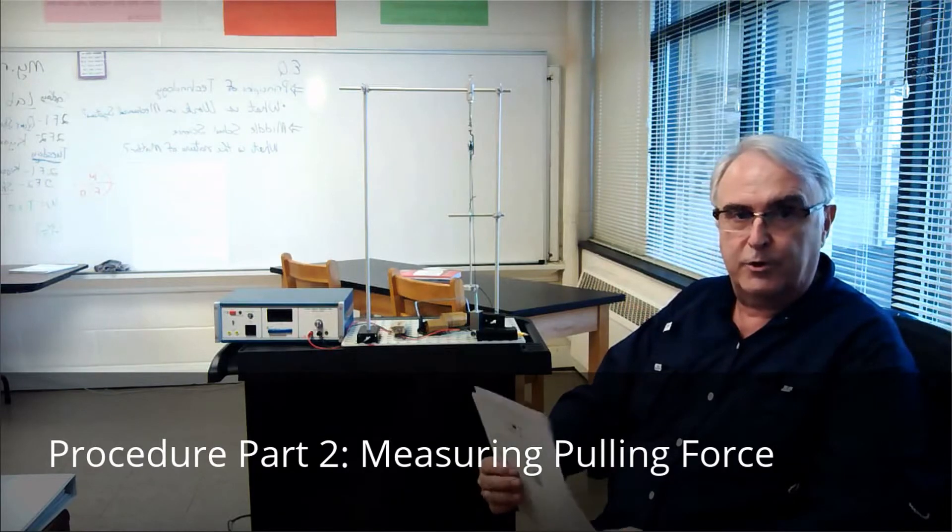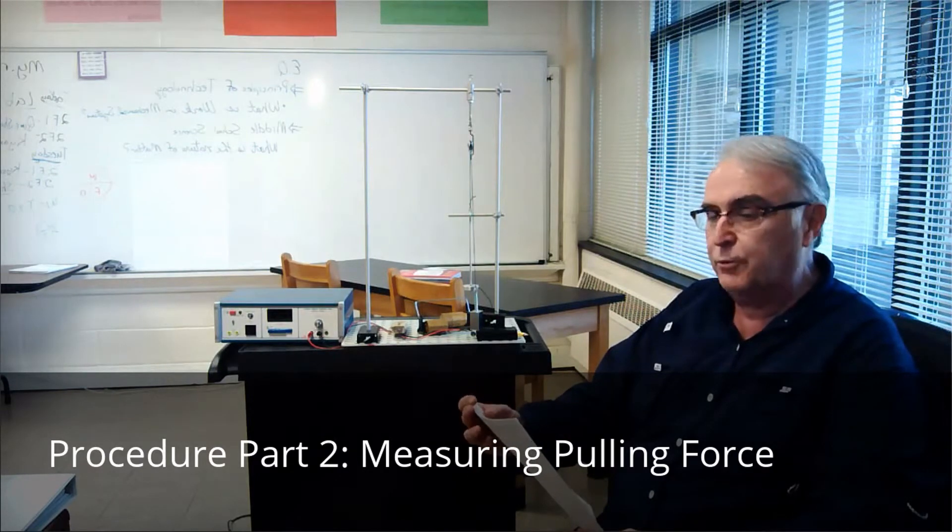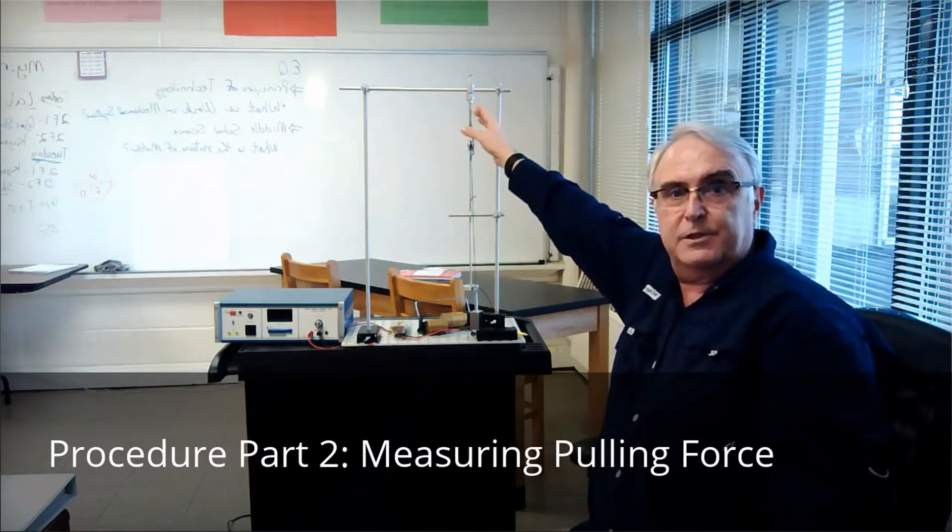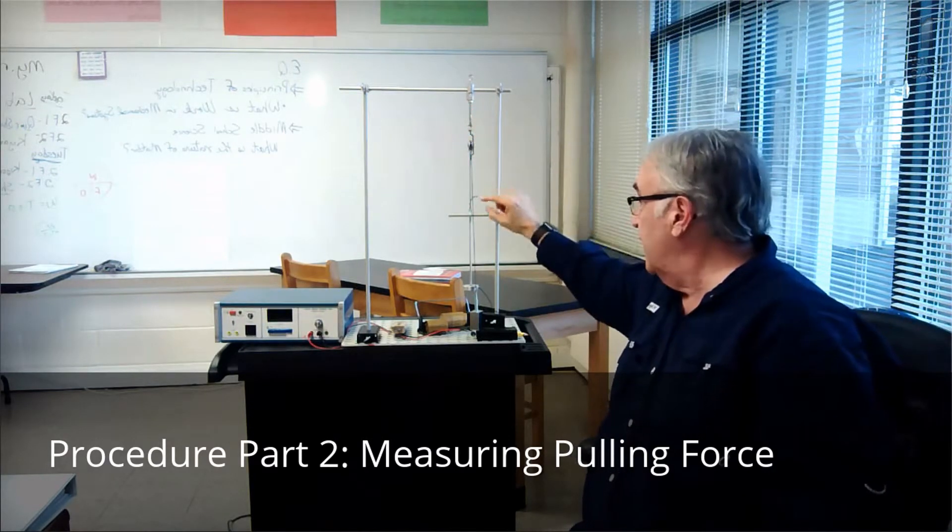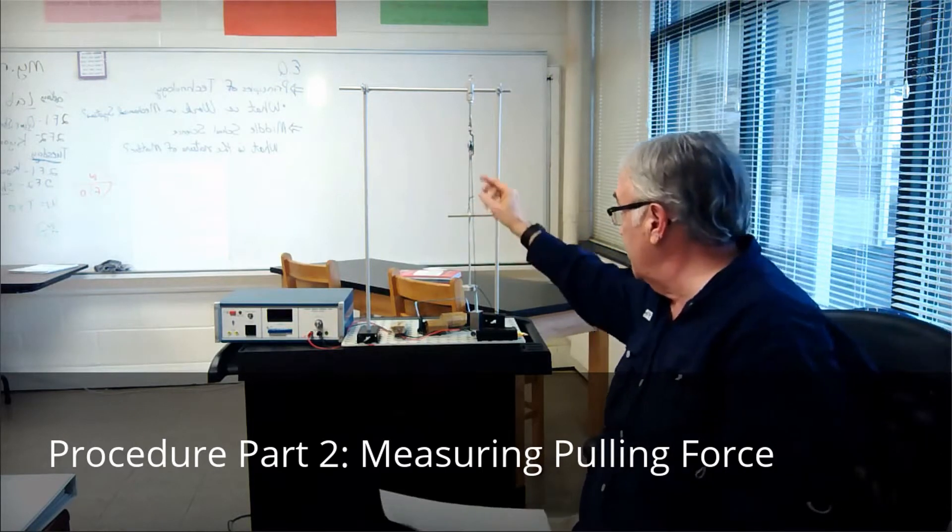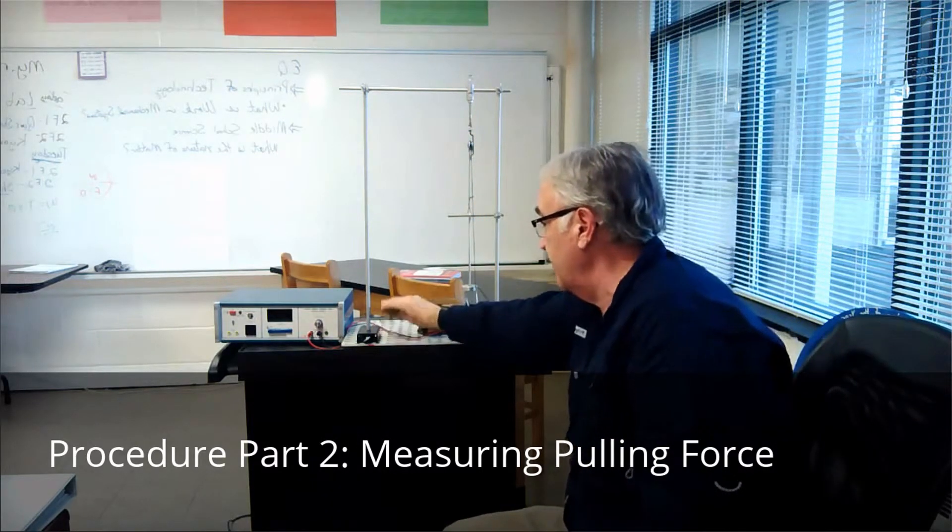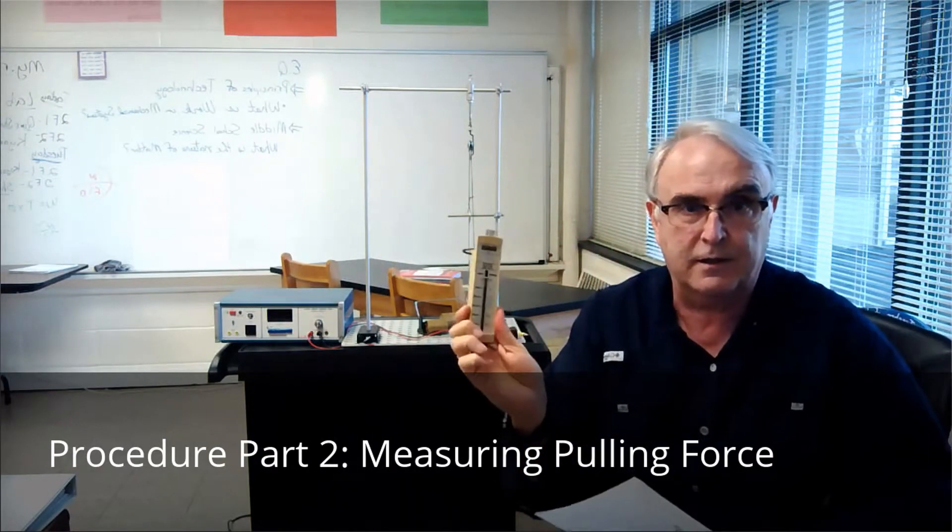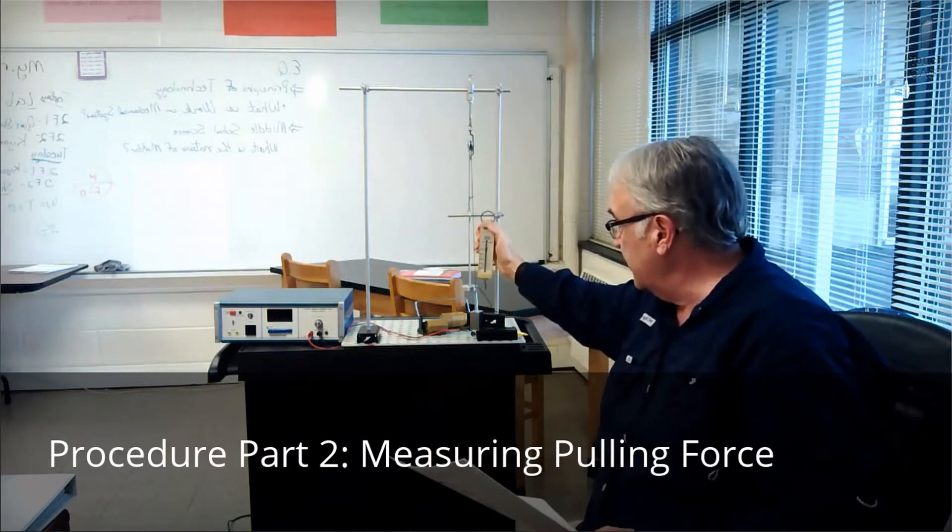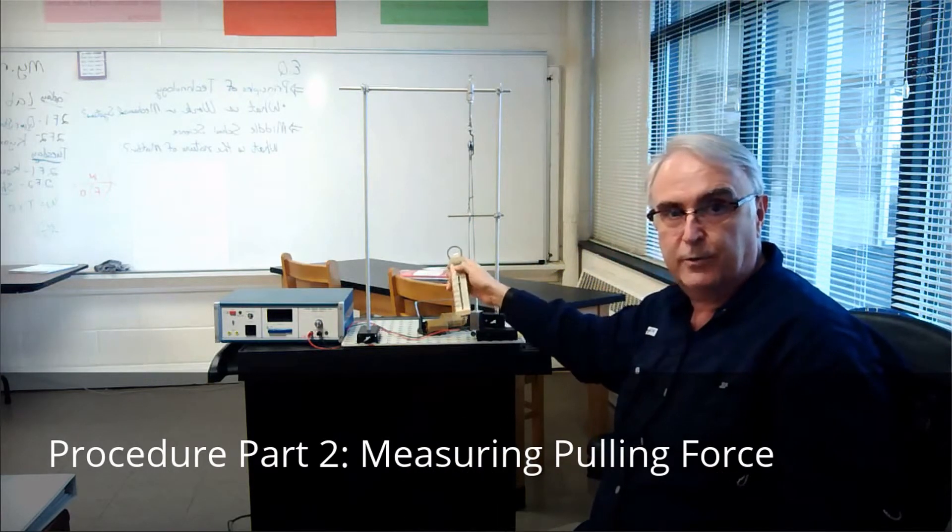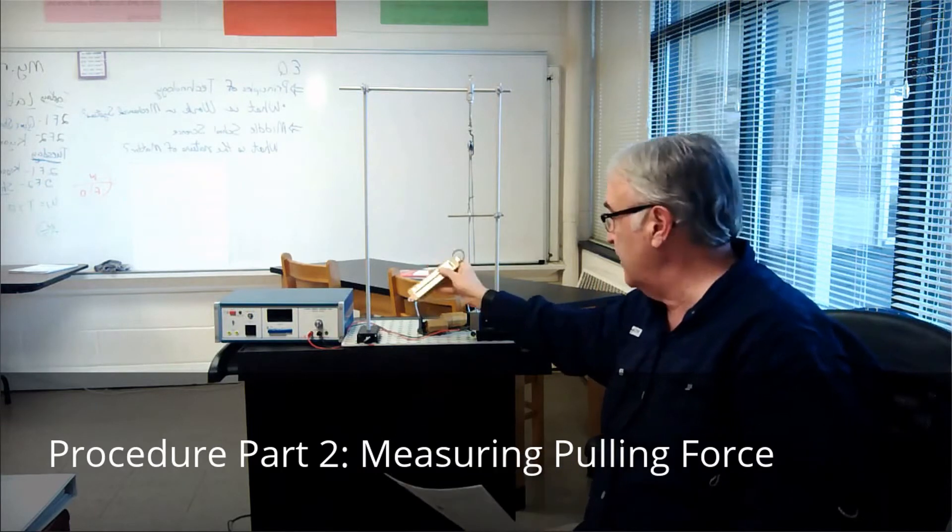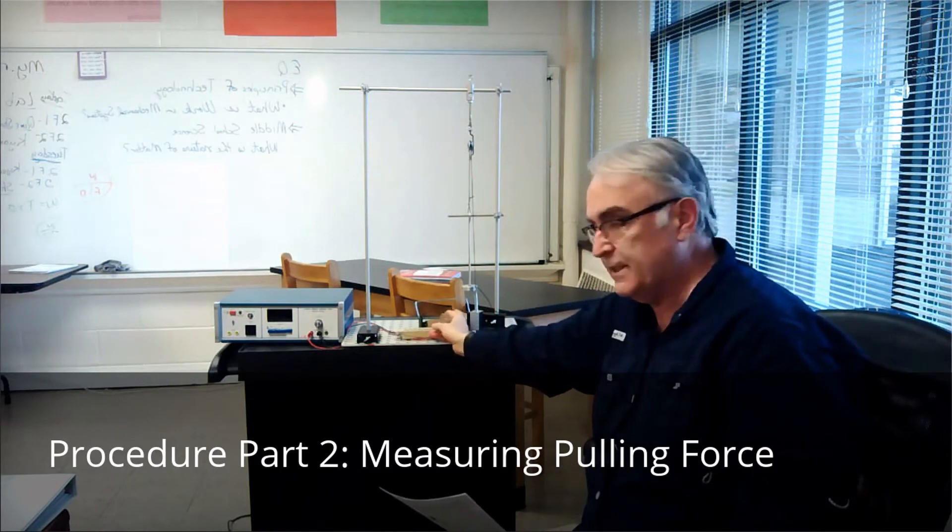Then there's a second part where you're going to measure what's called the pulling force. To do that you're going to have to disassemble this hanger right here and move it down to this short crossbar. When you get this moved down here you're going to be using a spring scale to connect it and adjust the height so that you can turn the voltage on and find out what the pulling force is in the solenoid based on the voltage.